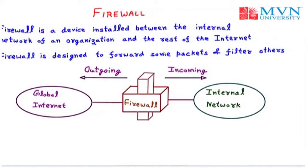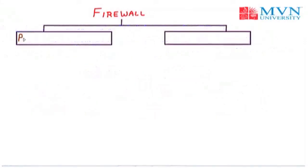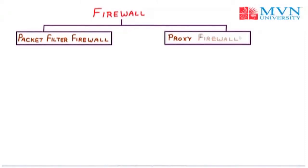A firewall is usually classified as a packet filtering firewall or a proxy firewall. So we are having two types of firewall: the first type is the packet filter firewall and the second type is the proxy firewall. First of all we will discuss the packet filter firewall.